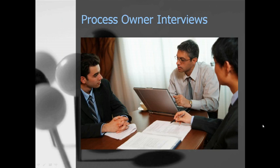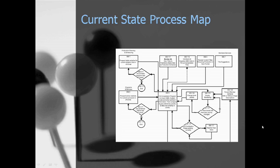After several weeks of doing these process owner interviews, we took all of this information and created what is called a current state process map — in Goldratt's term, the current reality tree. What you're seeing on the screen right now is about one-twentieth of the current reality tree process map that we created for Recording for the Blind and Dyslexic.